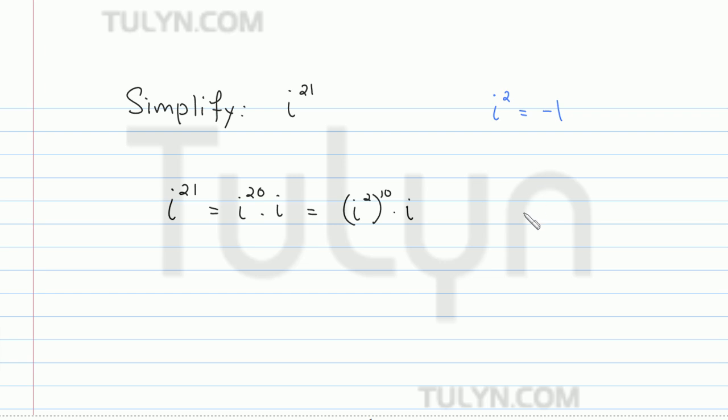Since remember, for properties of exponents, if you have a power and you're taking that to another power, what you do is you multiply the exponents. So in this case, 2 times 10 is going to be 20, so it's the same thing.